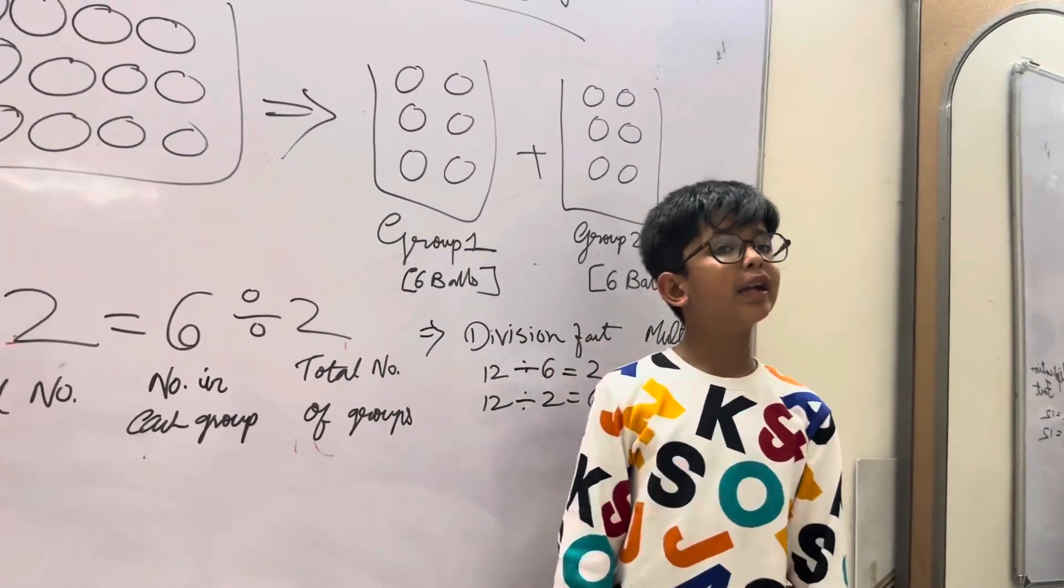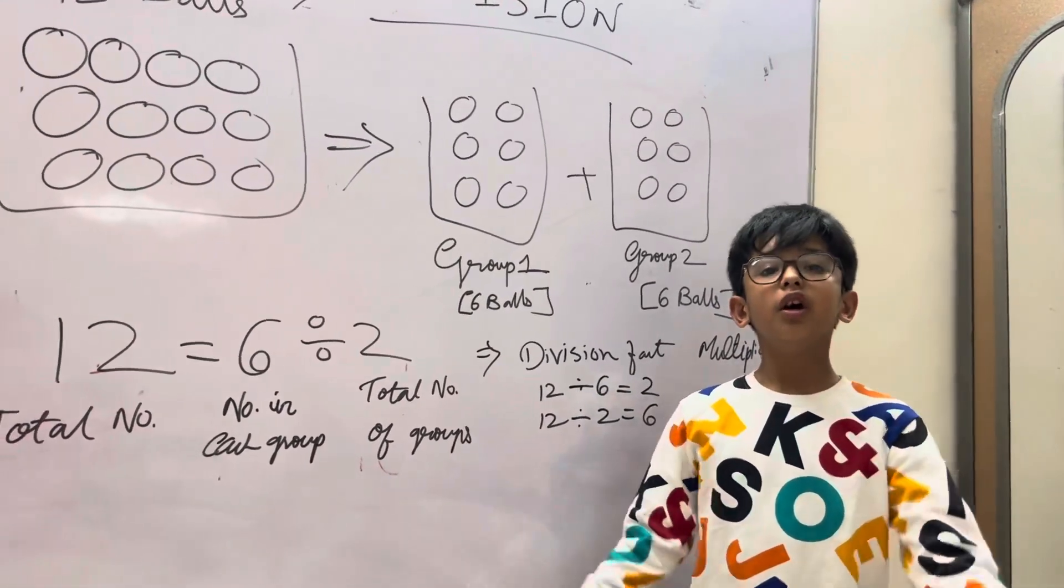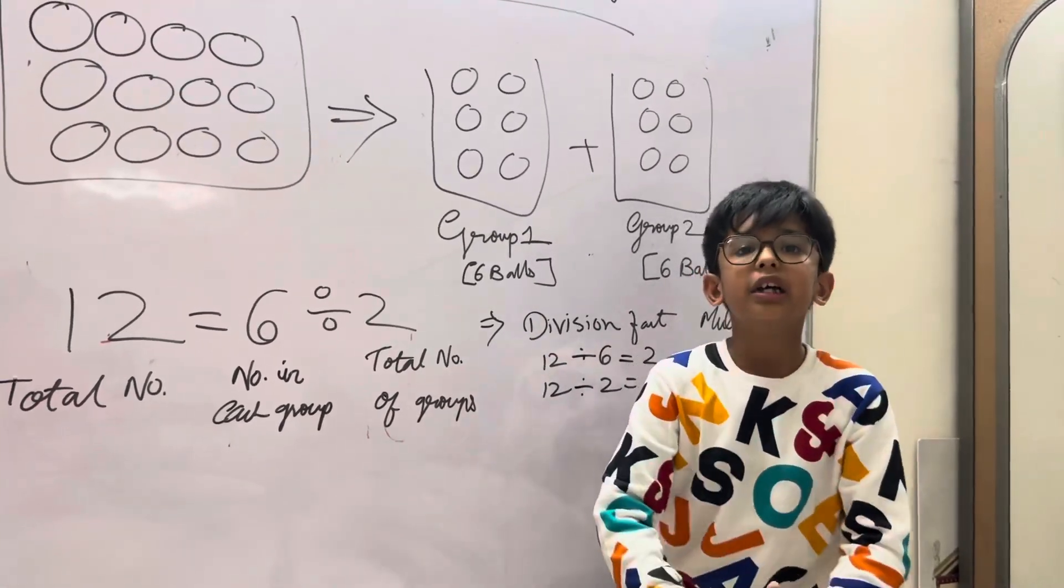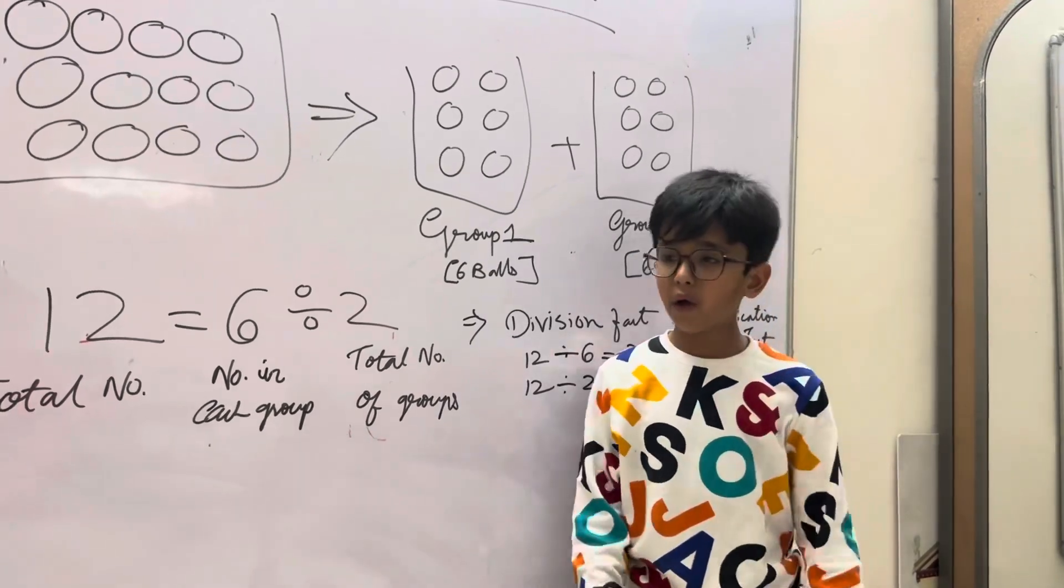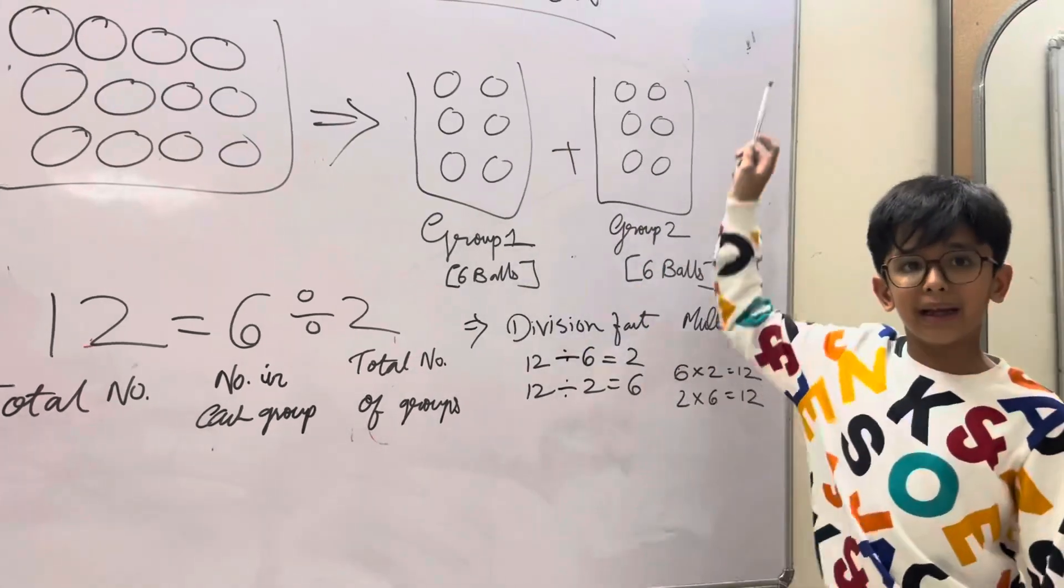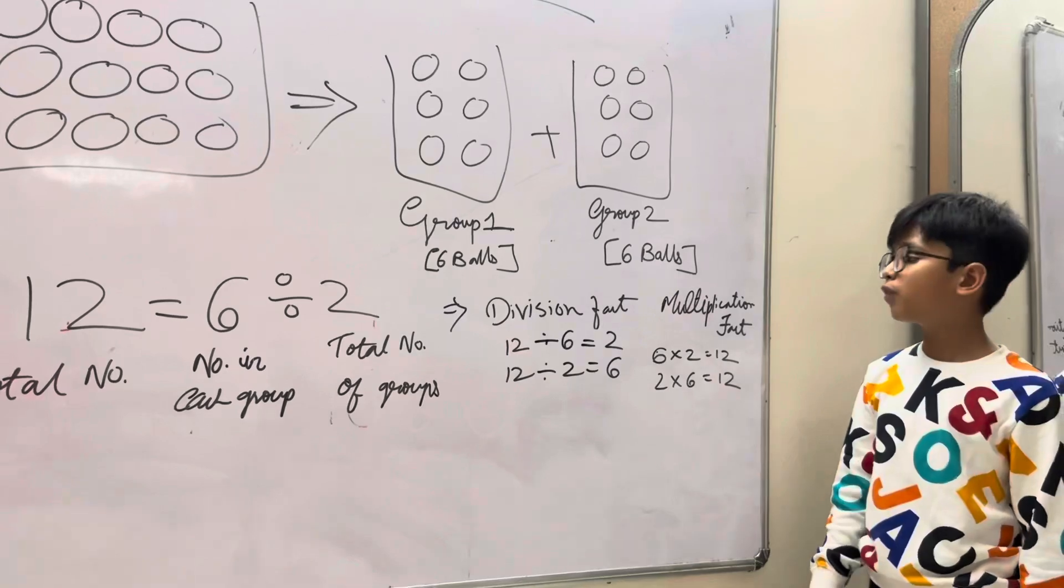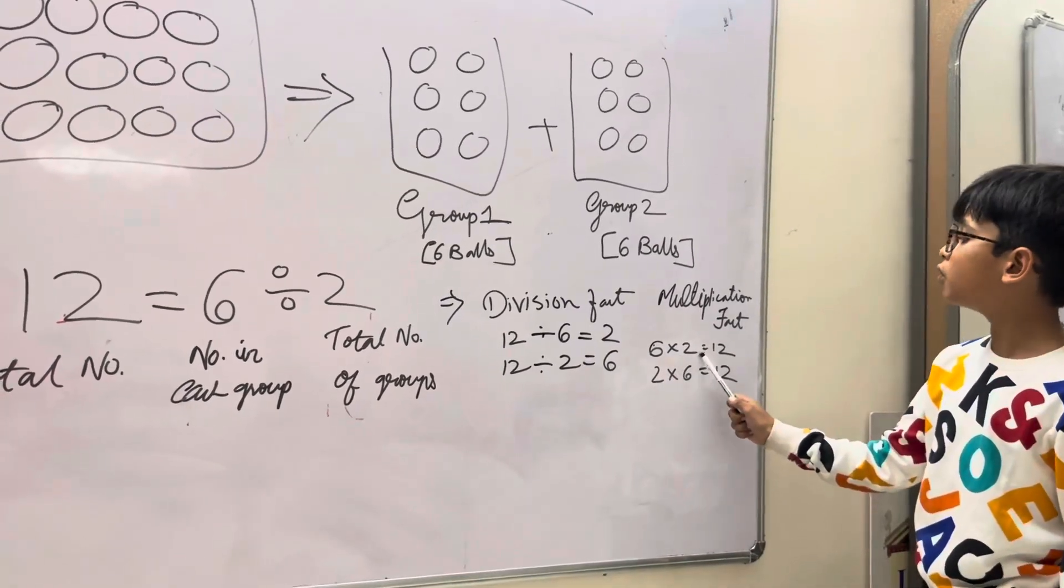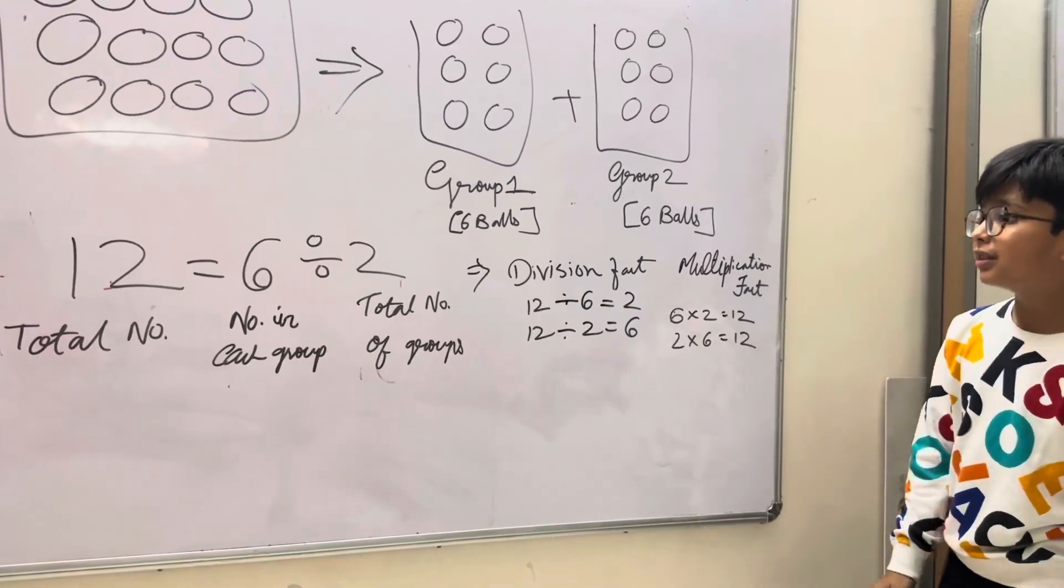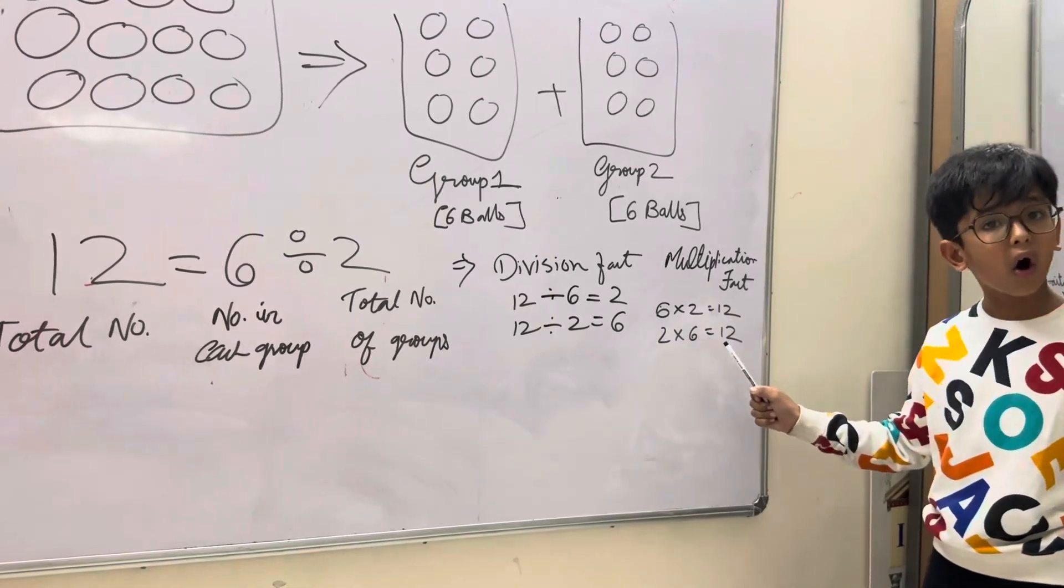Division and multiplication are inverse operations. Multiplication means joining into equal groups and division means separating into equal groups. Now we have to form 2 multiplication facts. So first multiplication fact is 6 multiplied by 2 is equal to 12. Now what is 6? 6 is number in each group. 2 is number of groups.